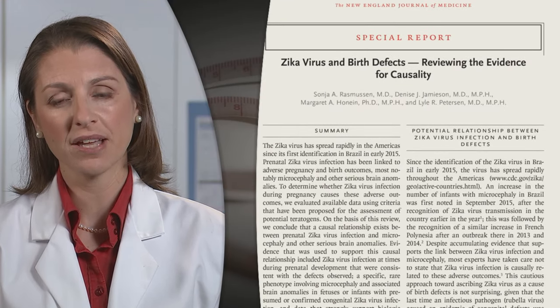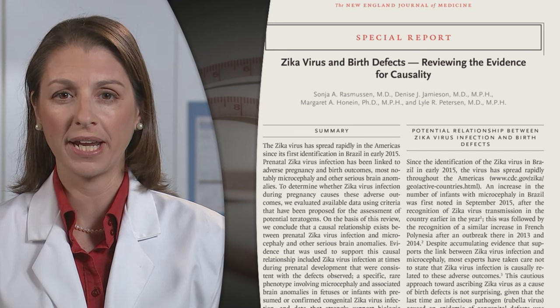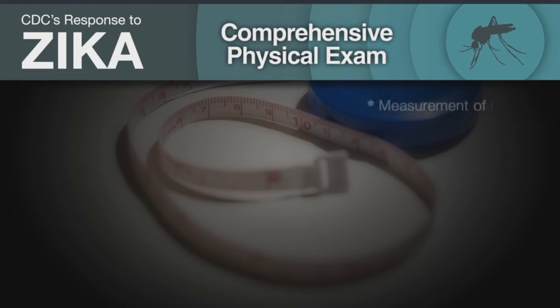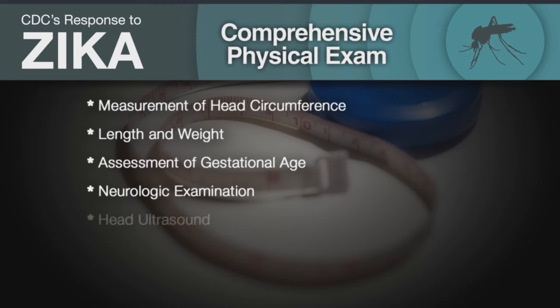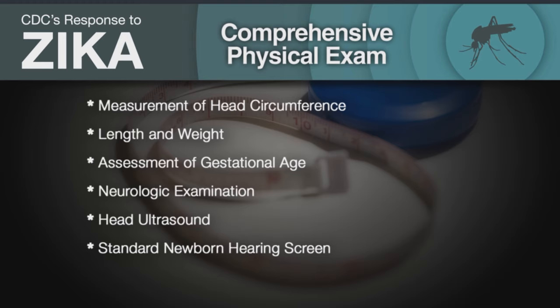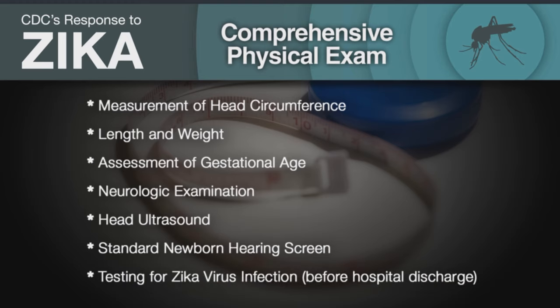Zika virus is a cause of microcephaly and other severe fetal brain abnormalities. All infants born to mothers with laboratory evidence of confirmed or possible Zika virus infection during pregnancy should receive a comprehensive physical exam, including measurement of head circumference, length and weight, an assessment of gestational age, a neurologic examination, a head ultrasound to assess the brain structure, a standard newborn hearing screen, and testing for Zika virus infection before hospital discharge.